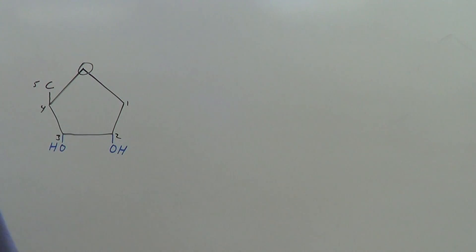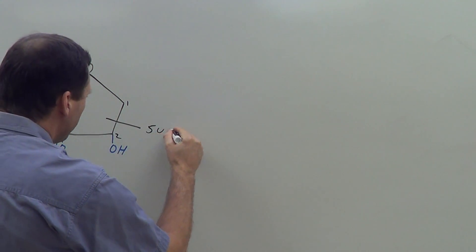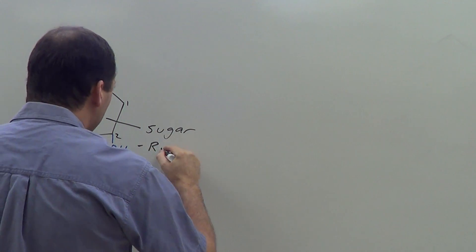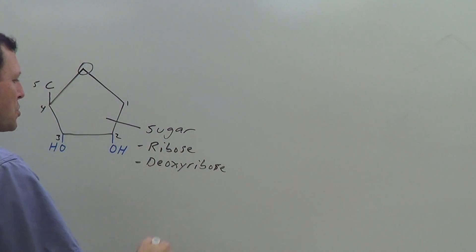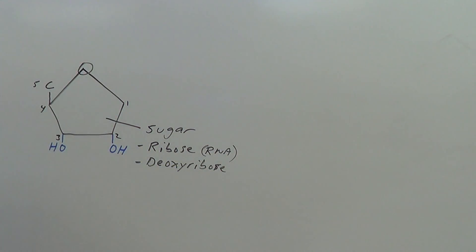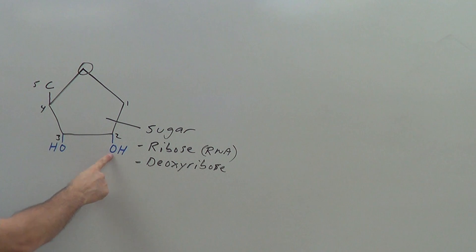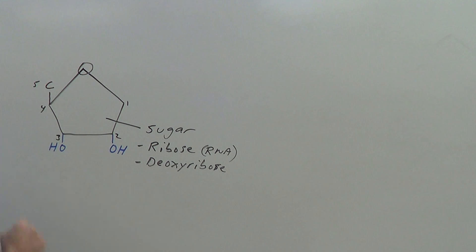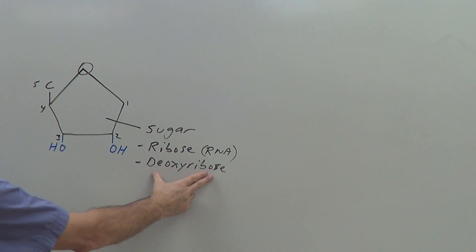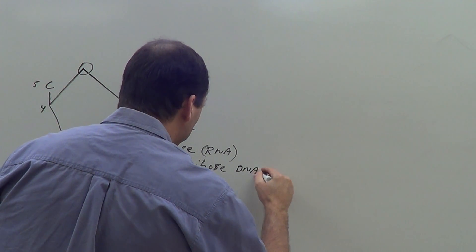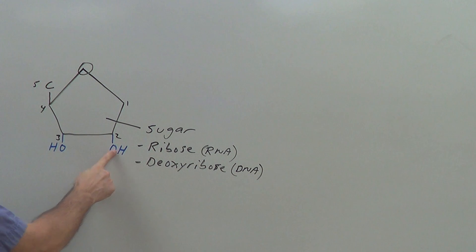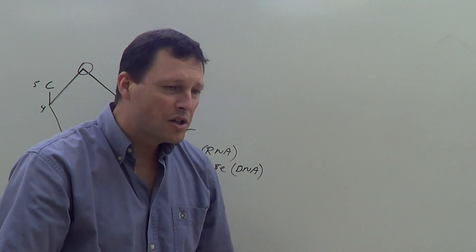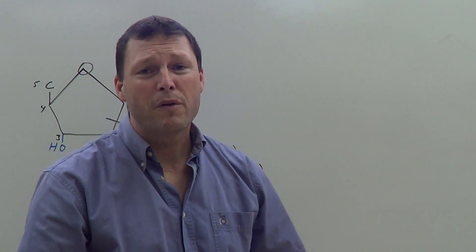The sugars actually come in two varieties: ribose and deoxyribose. Ribose is found in RNA — what I've drawn is ribose — and ribose has an oxygen at the second position, meaning the oxygen is attached to the second carbon. DNA contains deoxyribose, and the only difference between these two sugars is that oxygen attached to the second carbon. But it's a big difference, because RNA only has to be around for about a day to do its job.